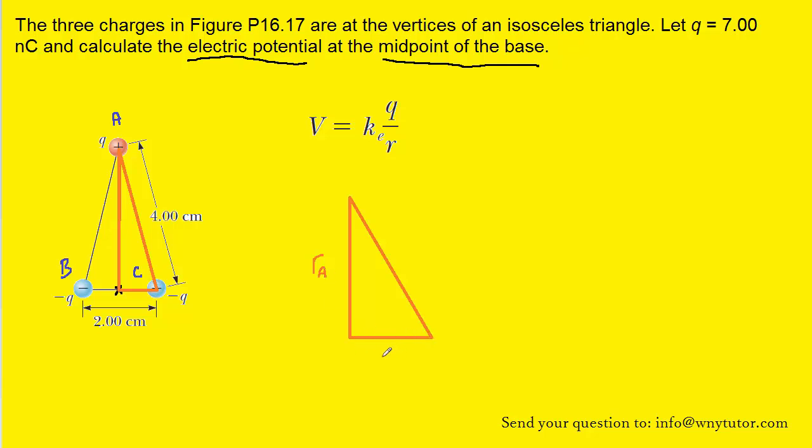We know that this side of our right triangle would be one centimeter, and then the hypotenuse would be four centimeters. So we could use the Pythagorean theorem to find RA. So here is our A squared plus B squared equals C squared.